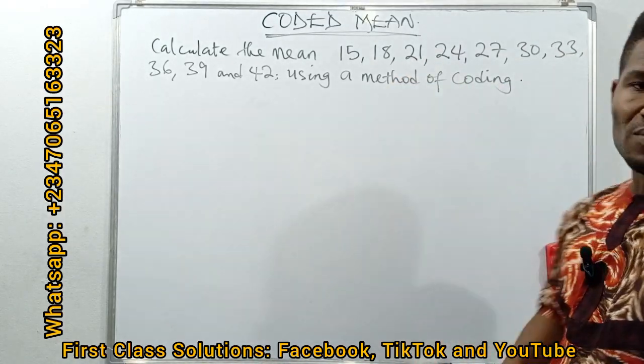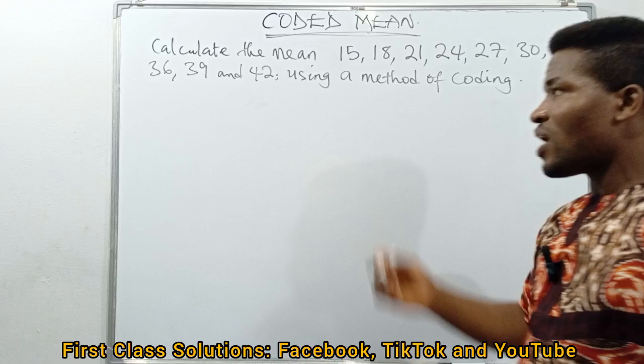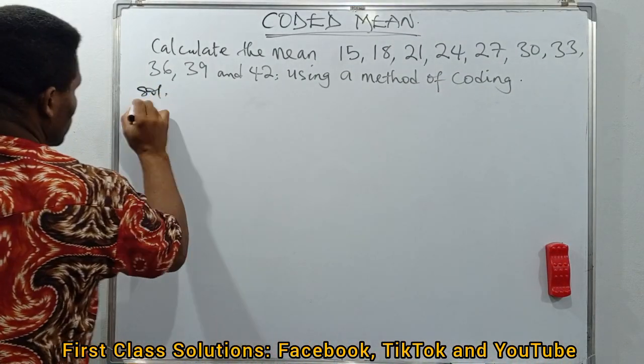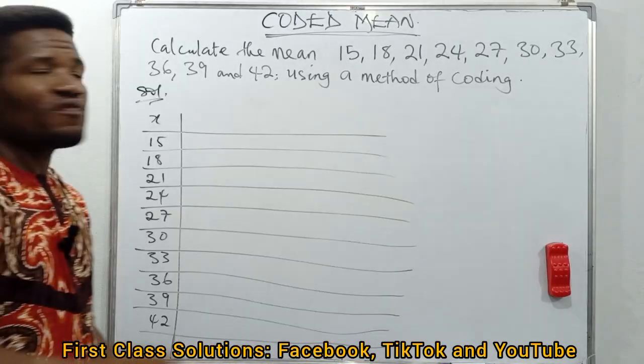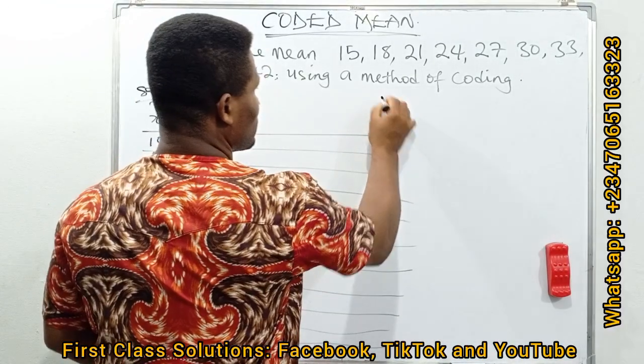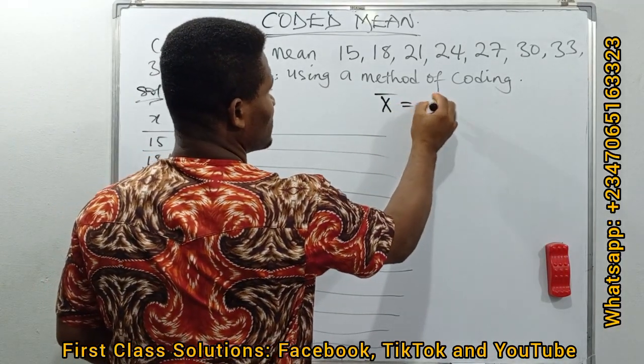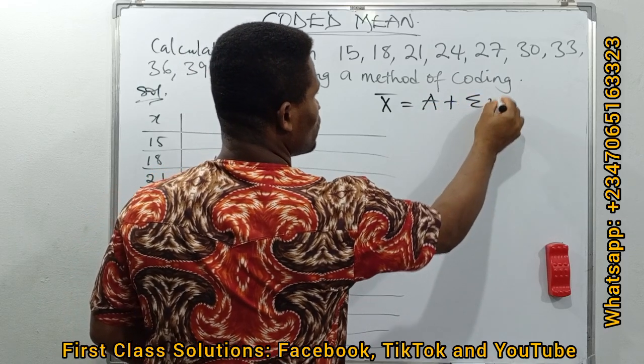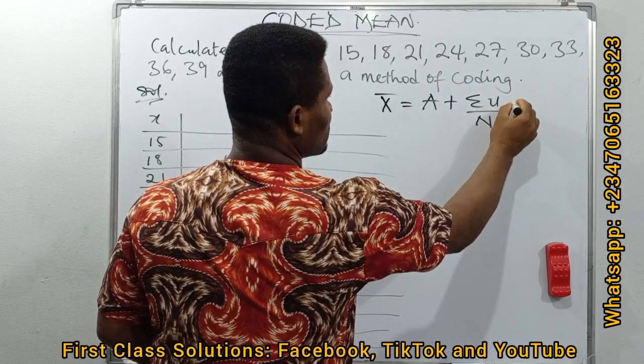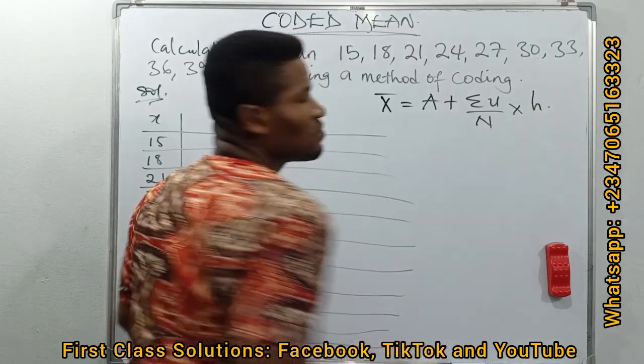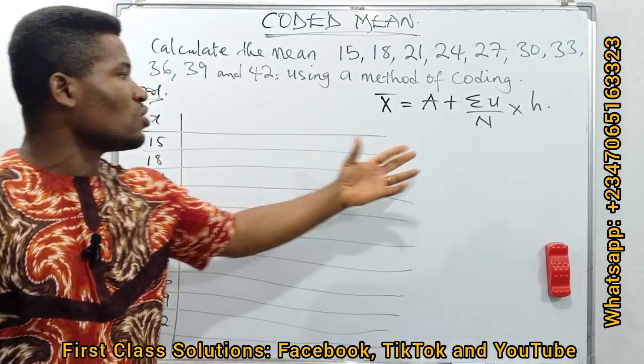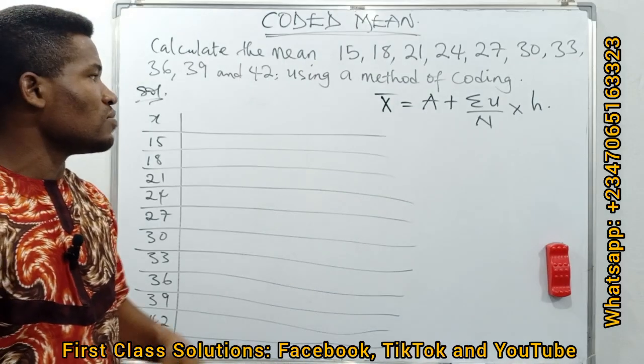Using the method of coding to calculate the mean of this distribution, we need to draw out a table to get it solved. First of all, solution. Following from the formula that states that X-bar is given as A plus sum of U over N times H.